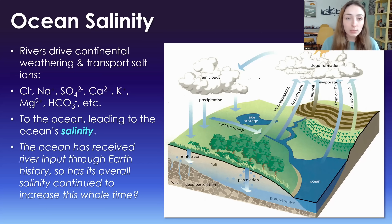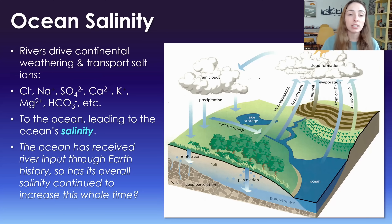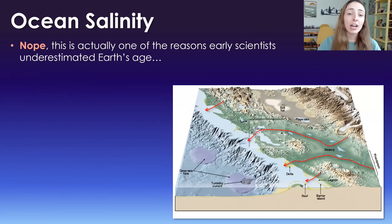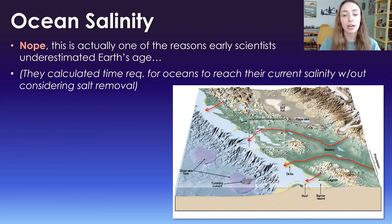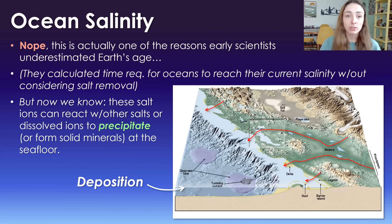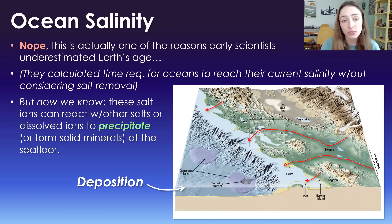You might wonder whether the ocean's salinity has been constantly increasing since it formed, with zero declines throughout Earth's history. No — this is actually one of the reasons early scientists underestimated Earth's age. They calculated the time required for oceans to reach their current salinity level, but they forgot to consider salt removal. They only considered the input of salt without accounting for the fact that it is actually removed through various processes.